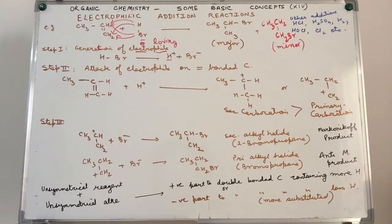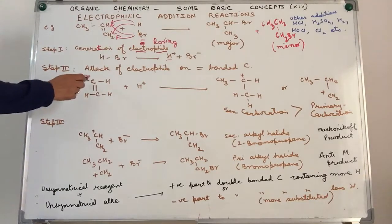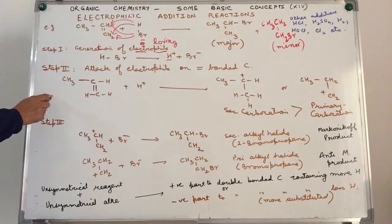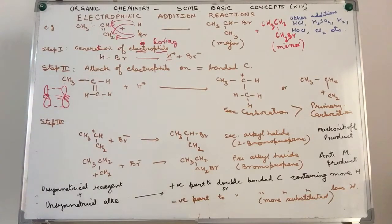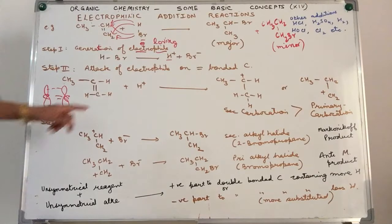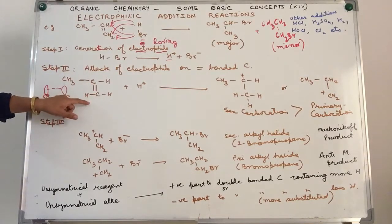Why not bromide? Because bromide is already electron rich. The C=C double bond is formed by a pi bond combination — there is electron cloud above and below the nuclear axis. So it will not attract the Br negative so easily. Therefore H positive goes and attacks the substrate molecule.